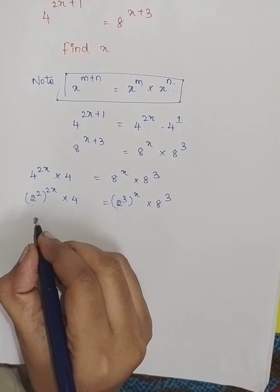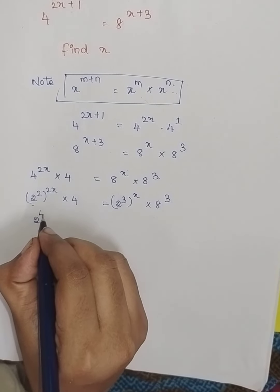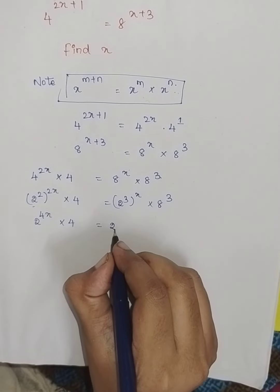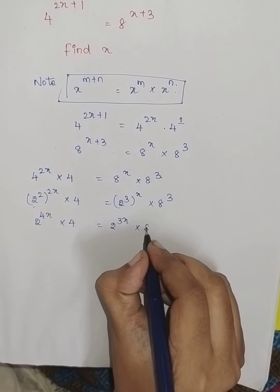So, this can be written as 2 power 2 into 2, which is 4x into 4. And here 3 into x, 2 power 3x into 8 cube.